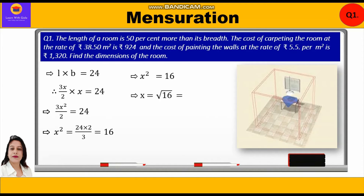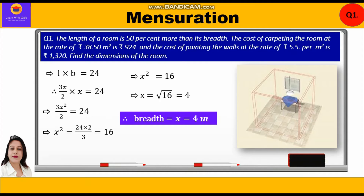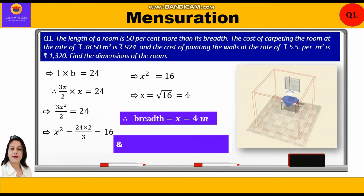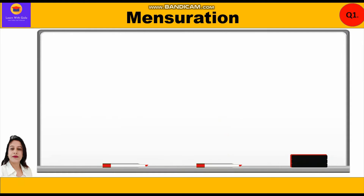Since x² = 16, we get x = √16 = 4. Therefore, breadth = x = 4 meters, and length = 3x/2 = 3 × 4/2 = 6 meters. So we have calculated length and breadth. Now we shall move to finding the height using the area of four walls.